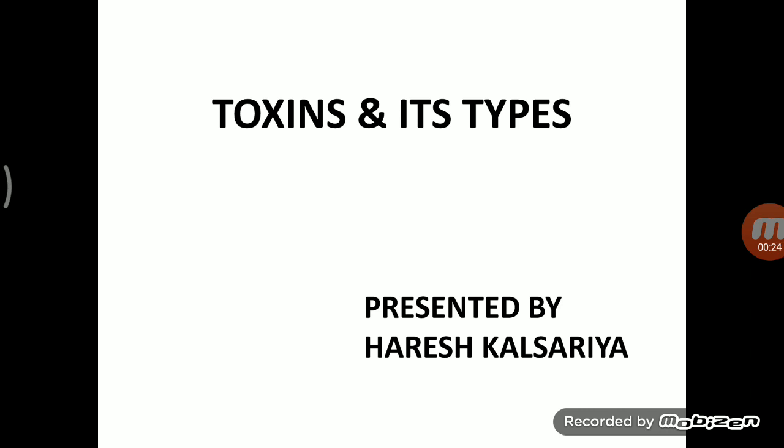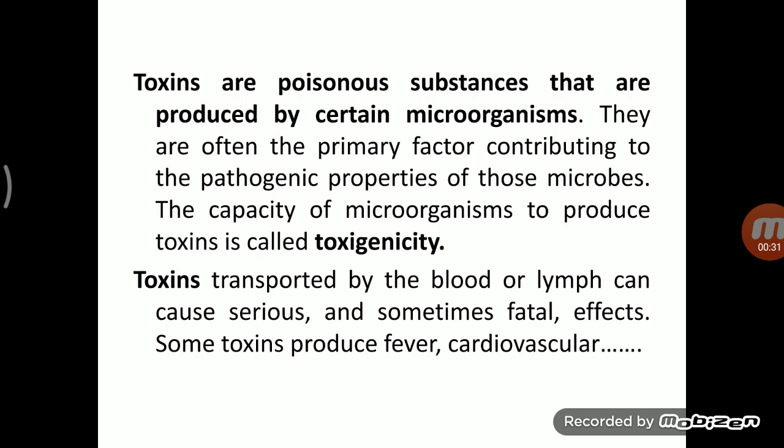The two types are classified based on the relative position of secretion and production. Toxin is a chemical poisonous substance produced by certain microorganisms — some bacteria, some fungi, some viruses produce toxic-like substances. They are often the primary factor contributing to the pathogenic property of these microorganisms.